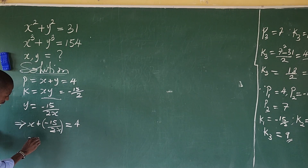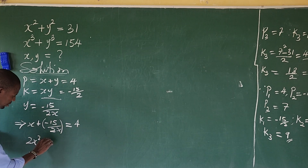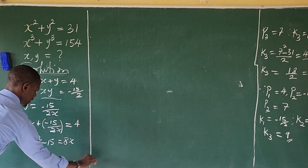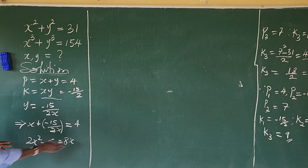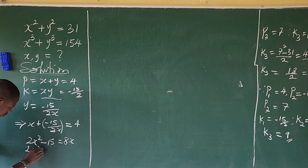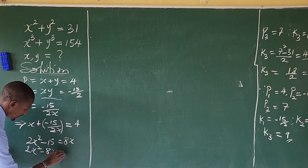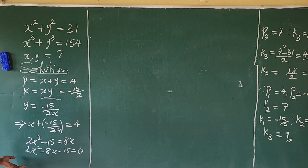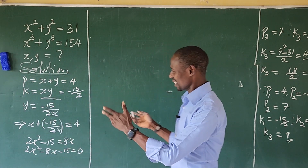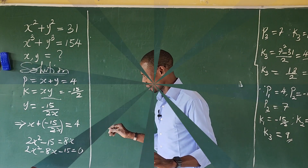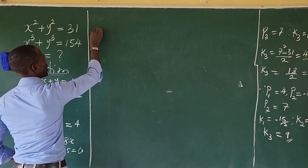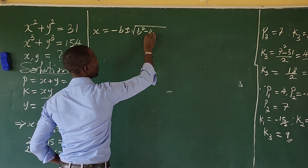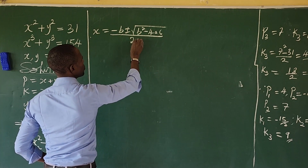Clearing the fraction gives 2X² − 15 = 8X, which rearranges to 2X² − 8X − 15 = 0. This is a quadratic equation we solve using the quadratic formula, where A = 2, B = −8, and C = −15.